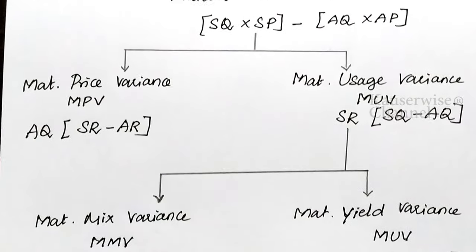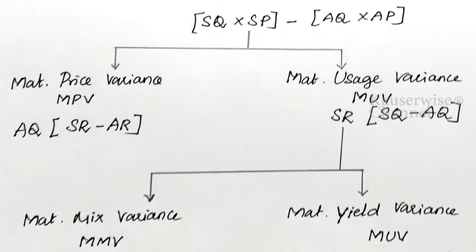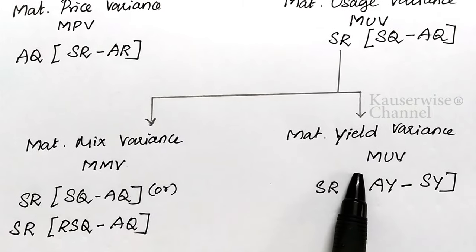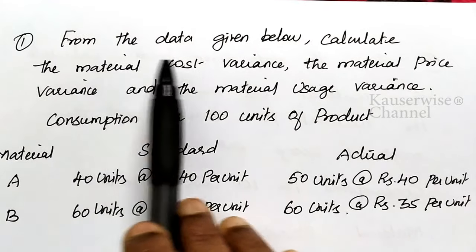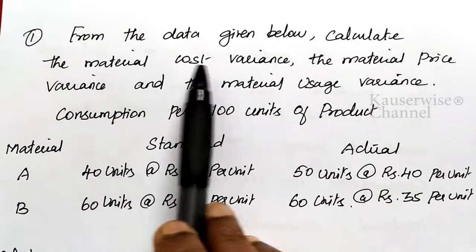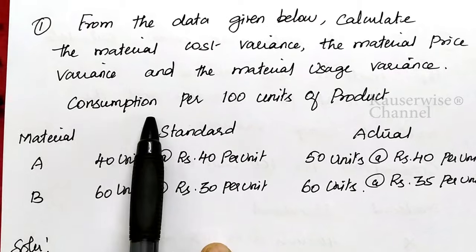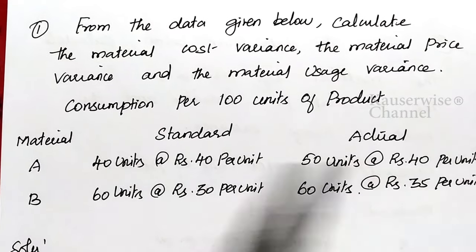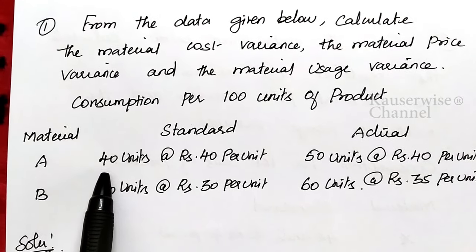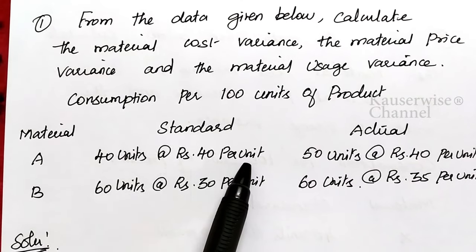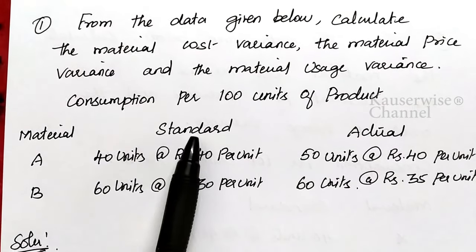Now let us see the problem. From the data given below, calculate the material cost variance, material price variance, and material usage variance. Consumption per 100 units of product: For material A — standard: 40 units at ₹40 per unit; for material B — standard: 60 units at ₹30 per unit. Actual: for material A — 50 units at ₹40 per unit; for material B — 60 units at ₹35 per unit.